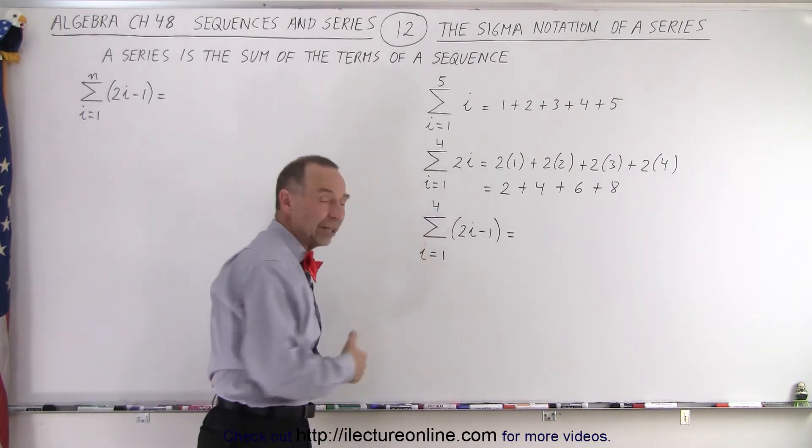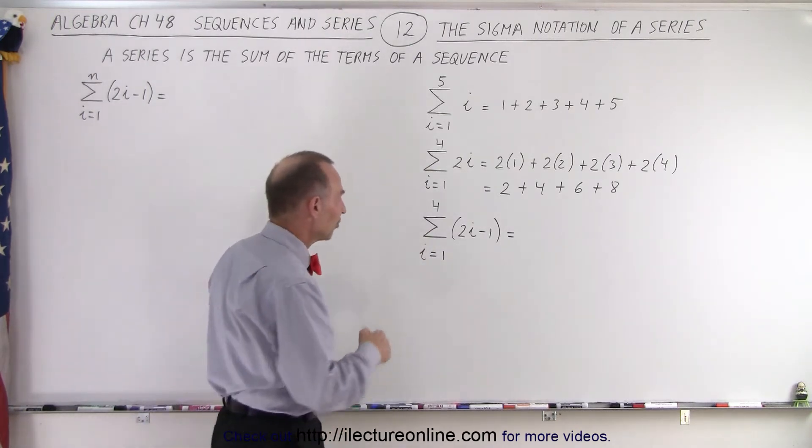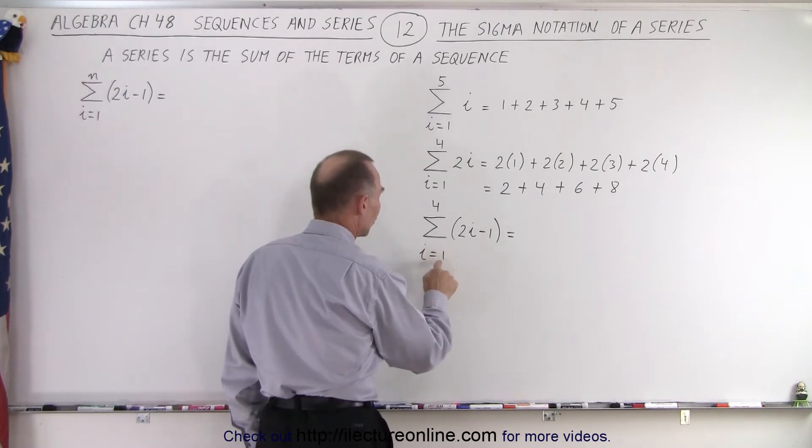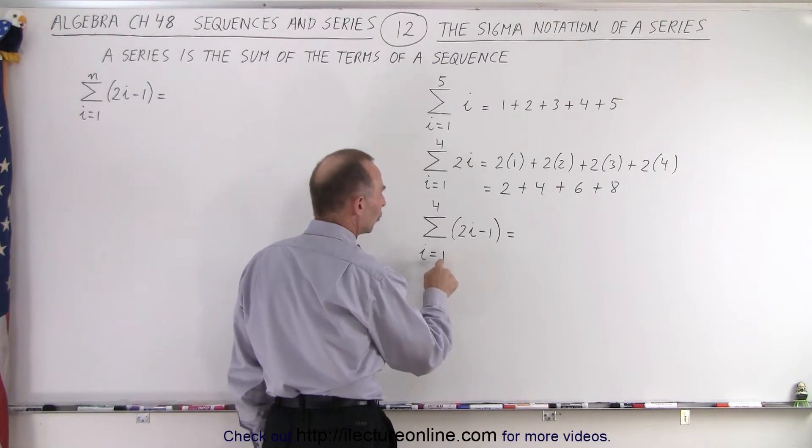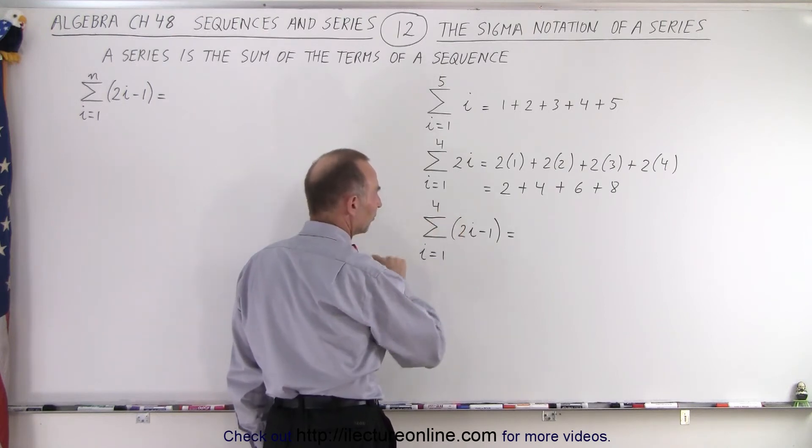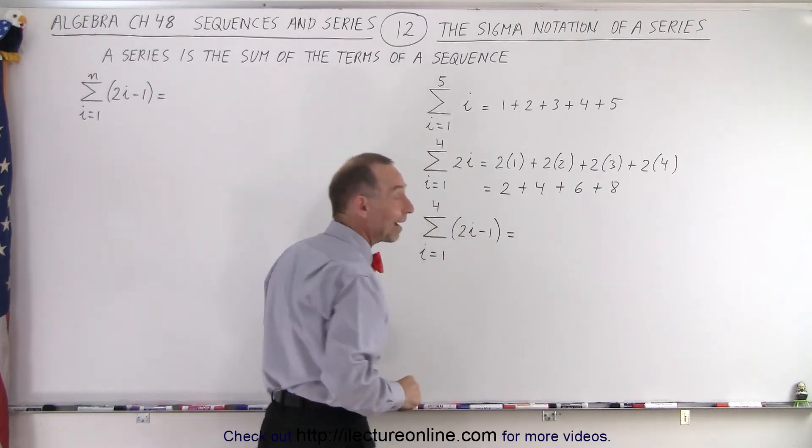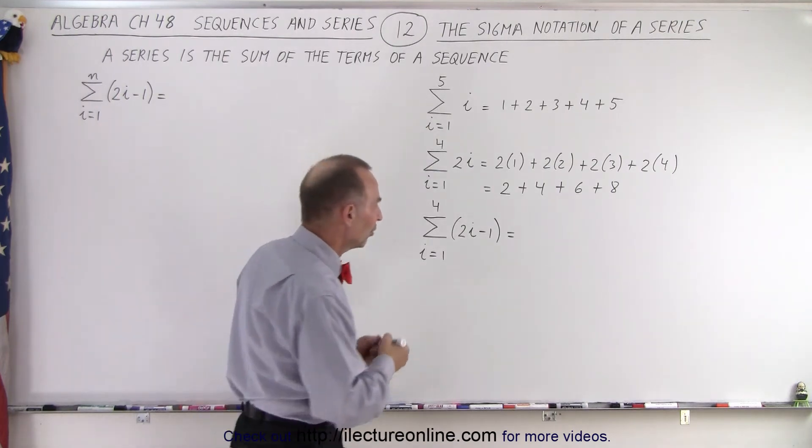What if we get something like this? Now let's do this one together. So we have the sum from i going from 1 to 4 of 2i minus 1. So we're going to let i go from 1 to 2 to 3 to 4, it doesn't go beyond 4 and we just plug in for i each single time and add them all up. So this becomes